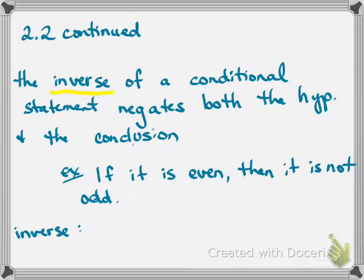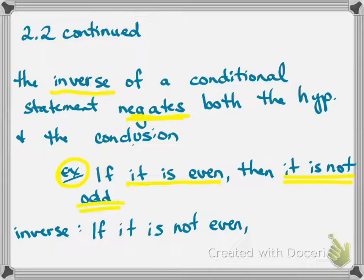So the third type is called an inverse. The inverse of a conditional statement negates both the hypothesis and the conclusion. So I've got an example written here. It says if it is even, then it is not odd. So we have the hypothesis here, and it's not odd. I'm going to double underline. So all we need to do for the inverse is to negate the hypothesis. So we need to negate if it is even. So we need to make that the opposite. So we'll say if it is not even, comma, and then we need to negate the conclusion. So then we need to negate it is not odd. So we will negate that by removing the word not. We'll say it is odd. And that's the inverse. It negates both the hypothesis and the conclusion.